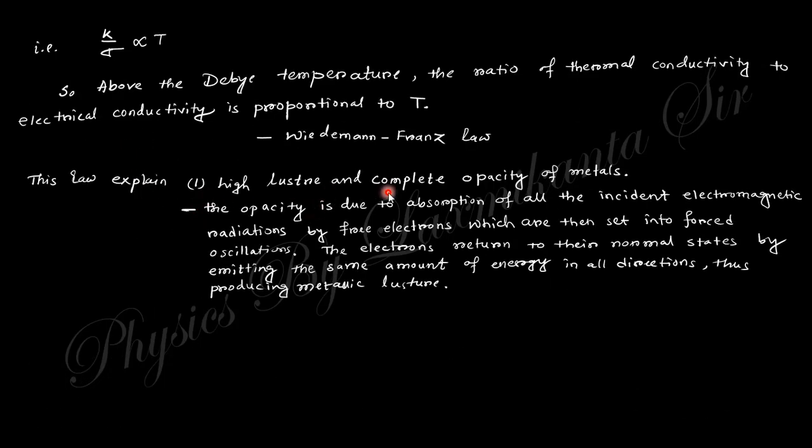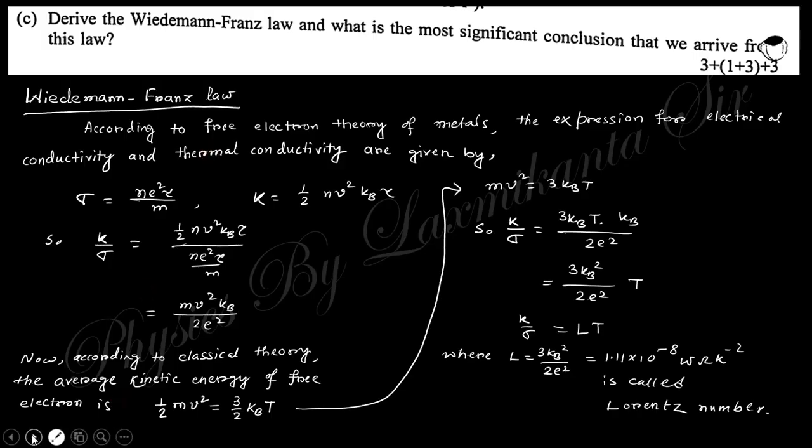This law actually says that the high luster and the complete opacity of the metal—the opacity is due to the absorption of all incident electromagnetic radiation by the free electrons, which are set into forced oscillation. The electrons present in the metal absorb all incident electromagnetic radiation, that's why there's no transmission or reflection. The electrons return to their natural state by emitting energy in all directions, thus producing metallic luster. High luster and complete opacity of the metal can be explained by this.